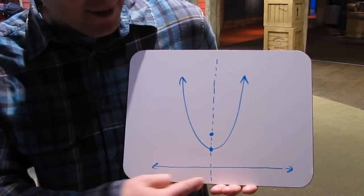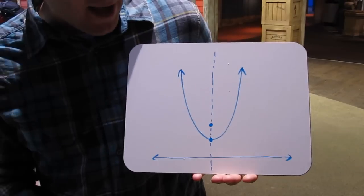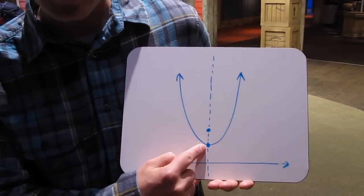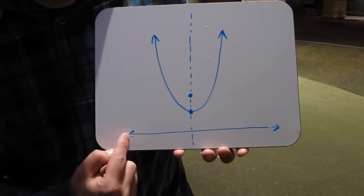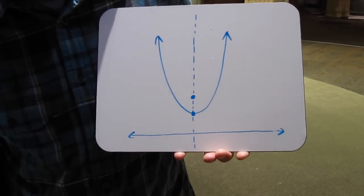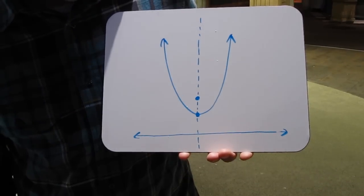Running right down the middle of the parabola is the axis of symmetry. At the very bottom here this is the vertex. Inside, this little point is called the focus. Finally, this line running perpendicular to the axis of symmetry is called the directrix.